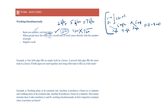When people work at the same rate, the overall rate of work varies directly with the number of people. If each person works at rate r, two people together work at 2r and five people together work at 5r. So if the number of people becomes five times, the rate also becomes five times — which is intuitive.